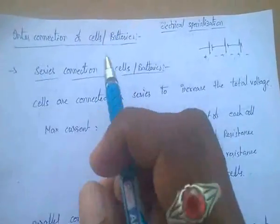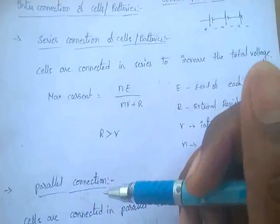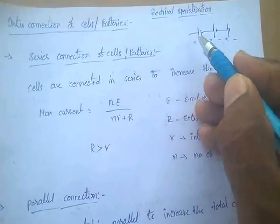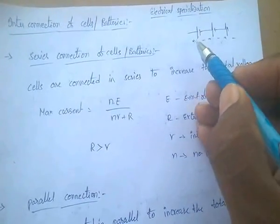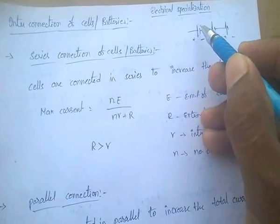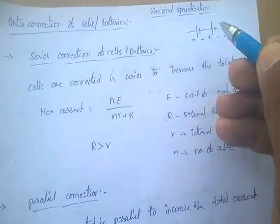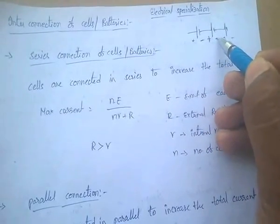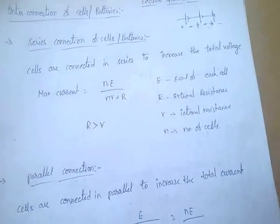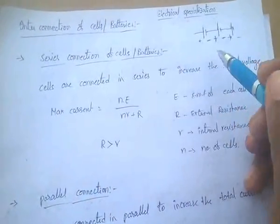Interconnection of cells or batteries. There are mainly two connections: series connection and parallel connection. In series connection, the negative side of one cell is connected to the positive side of the next cell. This type of connection is called series connection, and cells are connected in series.